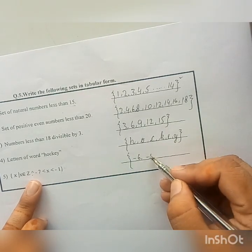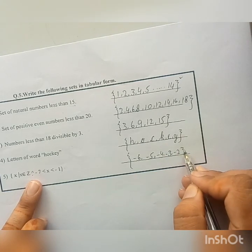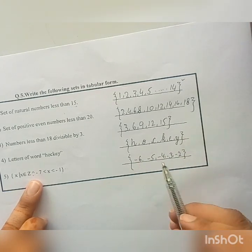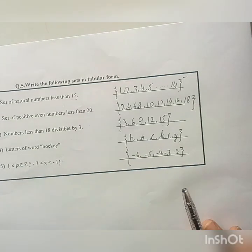So here will form {-6, -5, -4, -3, -2}. Because x lies between -7 and -1. That is -6, -5, -4, -3, -2 and that's all.